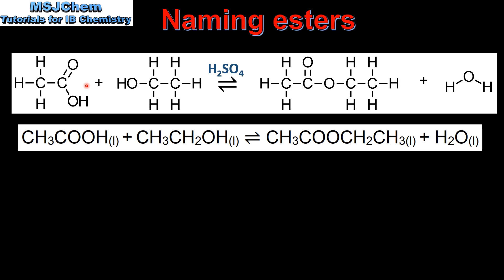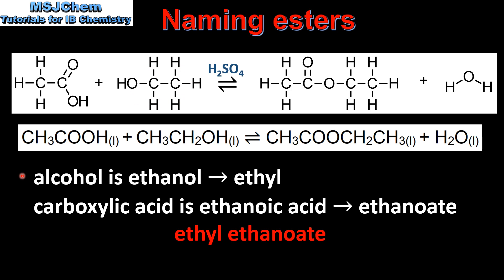Next we look at naming esters. In the previous example we had ethanoic acid reacting with ethanol. The alcohol is ethanol, which becomes ethyl. The carboxylic acid is ethanoic acid, which becomes ethanoate. The alcohol part comes first, so the ester is named ethyl ethanoate.